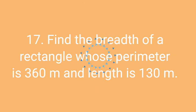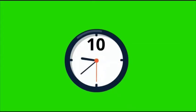Question number seventeen: Find the breadth of a rectangle whose perimeter is 360 meter and length is 130 meter. Think the correct answer of this question within 10 seconds. The timer is going to start now.